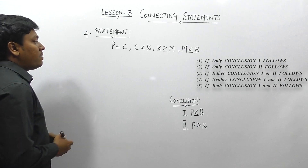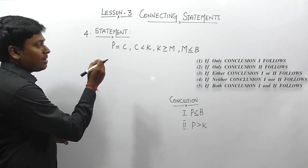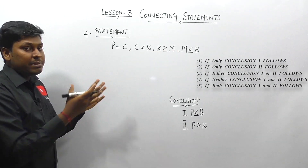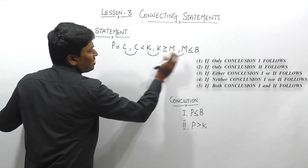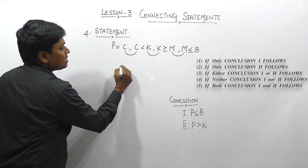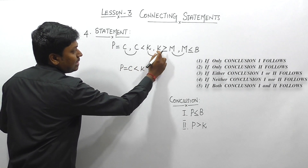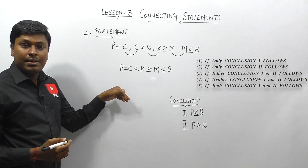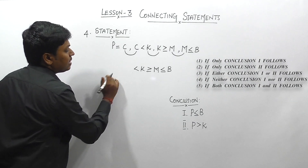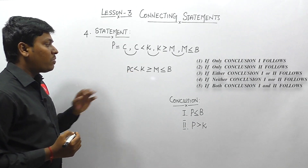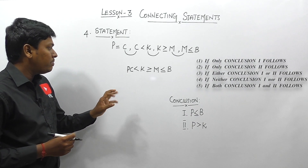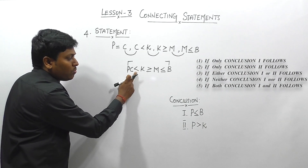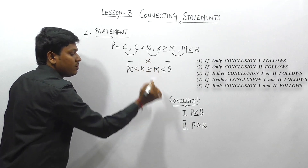Question 4 has four statements: P = C, C < K, K ≥ M, M ≤ B. Since C-C, K-K, and M-M connect consecutively, the single expression is: P = C < K ≥ M ≤ B. Since P and C are equal, they are written as PC.